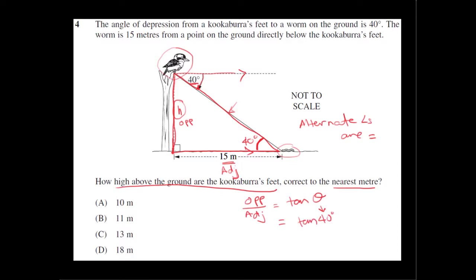So, tan 40 is the opposite, which is H over adjacent, which is 15 meters.